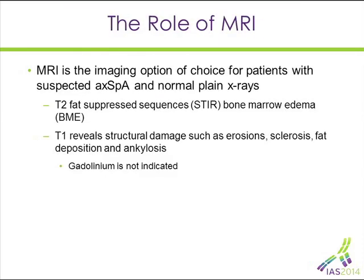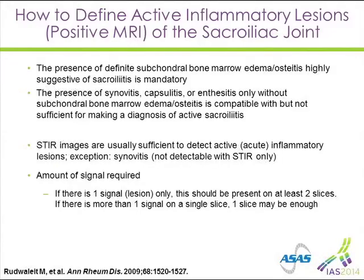If the film is read as normal, MR imaging of the sacroiliac joints is warranted. We now have criteria for these. It requires the use of two sequences: STIR images, which are fat-suppressed, and T1 images, which show inflammation. The criteria we're looking for is the presence of definite bone edema in multiple sequences — that's really the primary finding, enhanced when you also have erosions and synovitis.